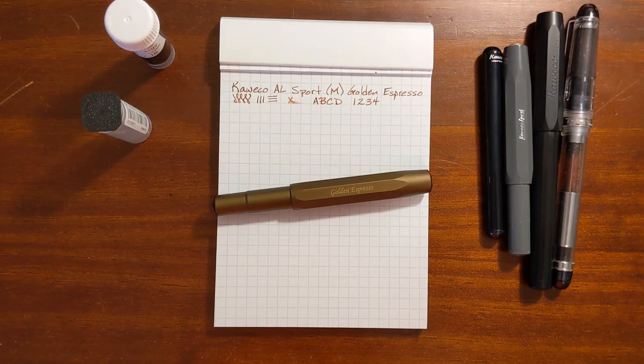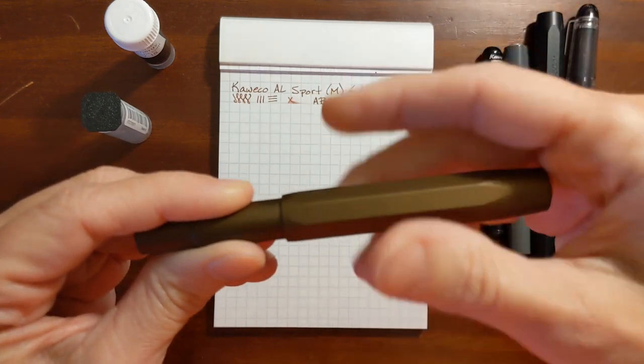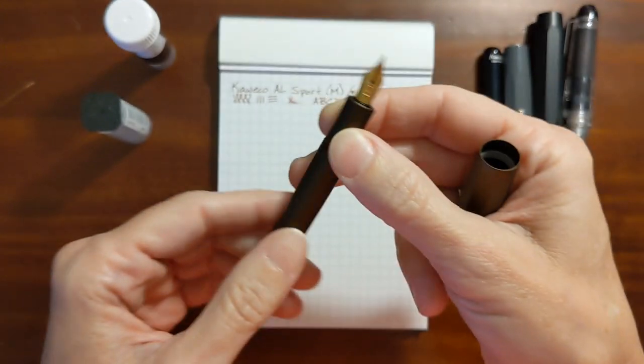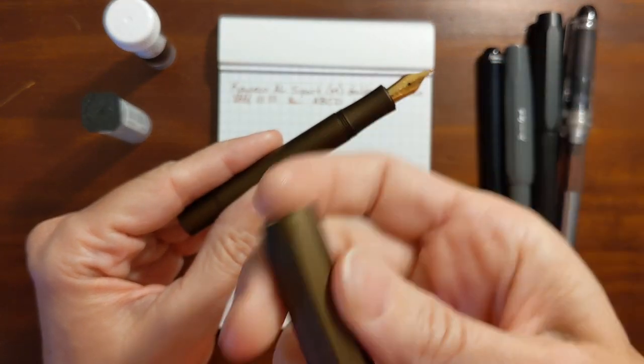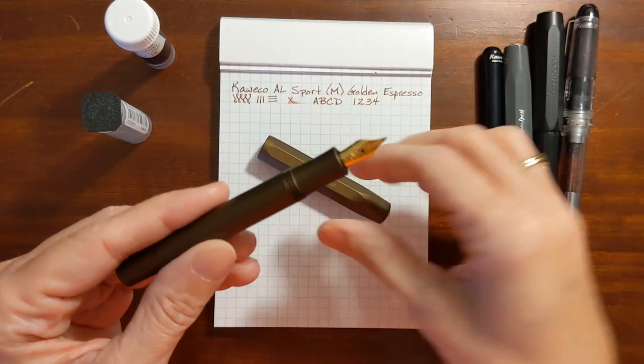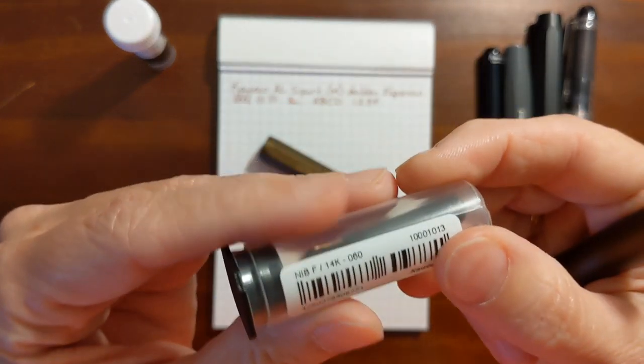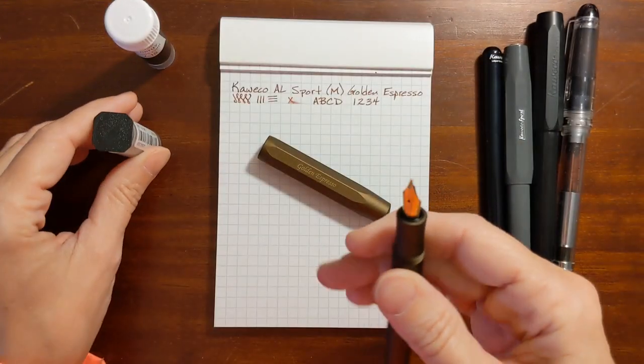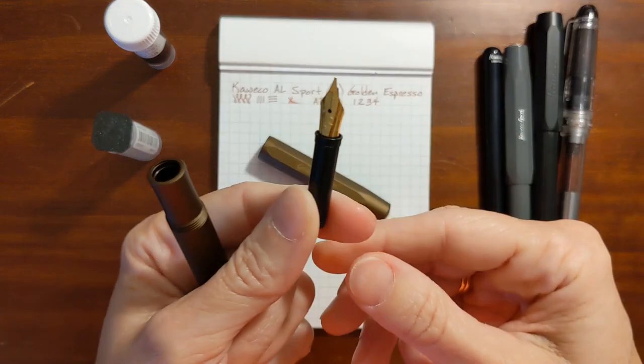This is Kathy from Gadget Stop 321 and in today's video I'm going to be swapping out the medium gold-plated steel nib that came on my Kaweco AL Sport the golden espresso model and I'm going to be replacing it with a 14 karat fine nib unit. The nice thing about these nib units is they just screw out and you can swap them.